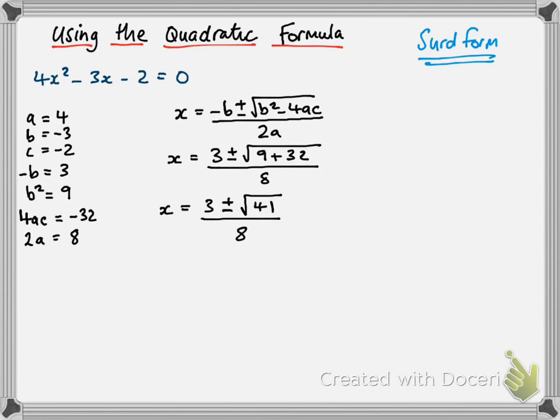Okay, we can split that up. We can have x = (3 - √41) / 8, or x = (3 + √41) / 8. Okay, and that's what surd form is. You just literally leave it as a surd, you don't work it out.